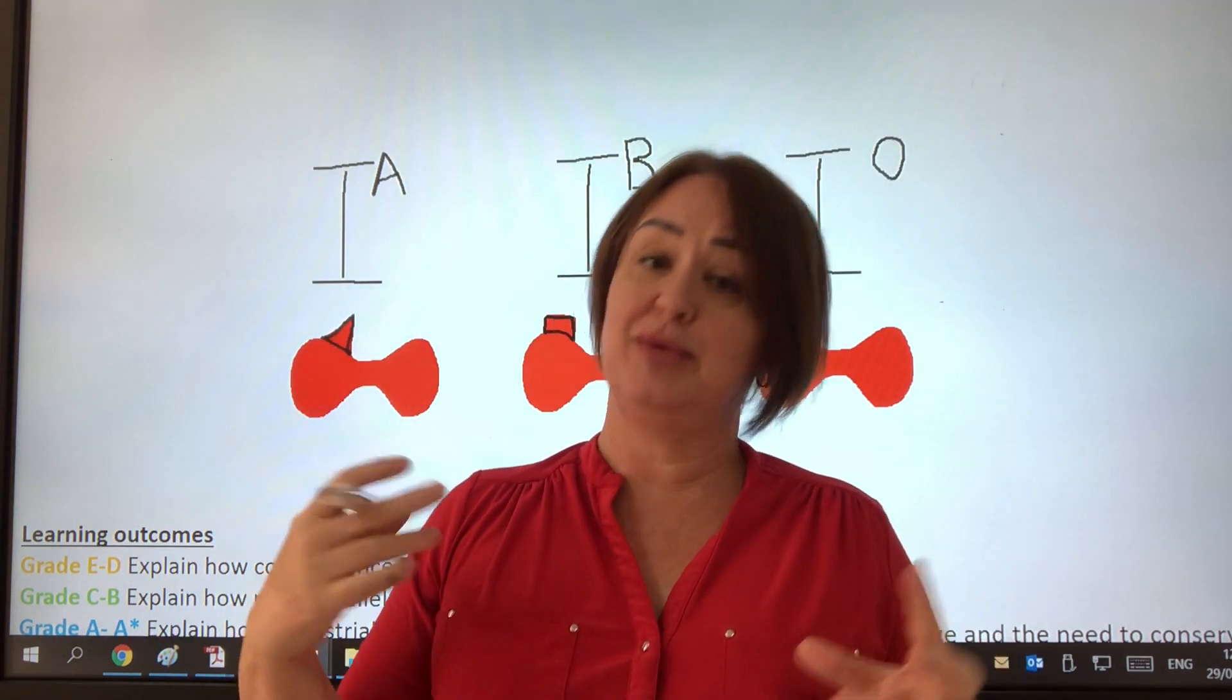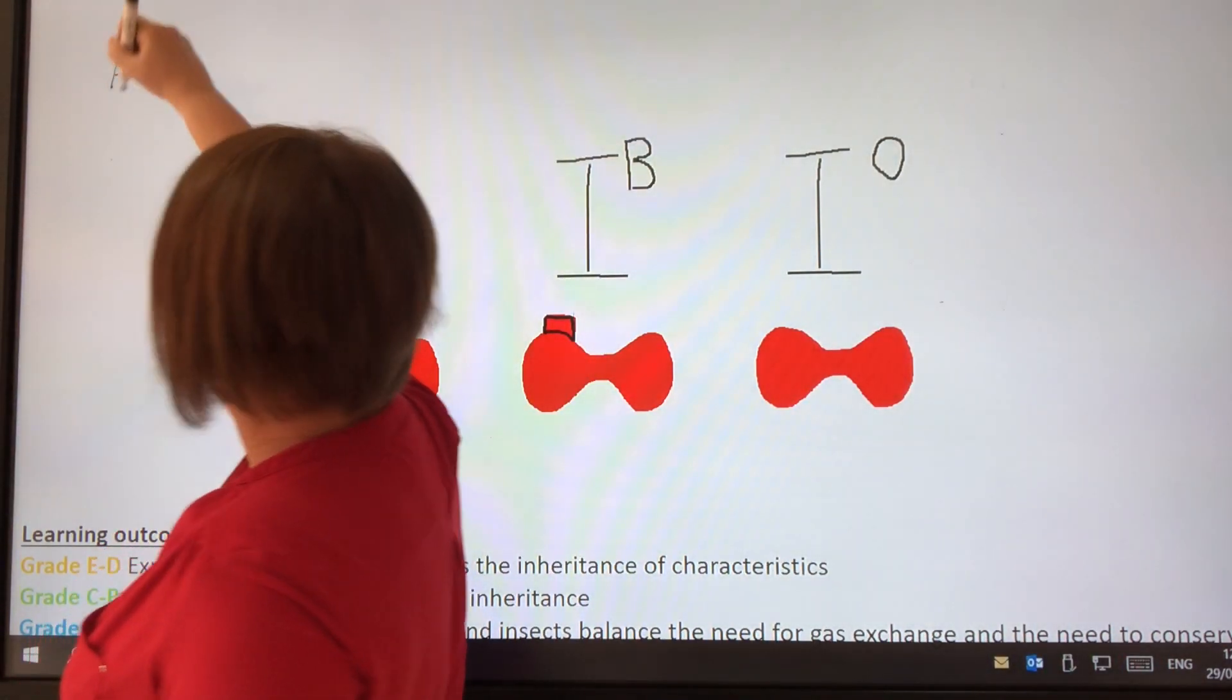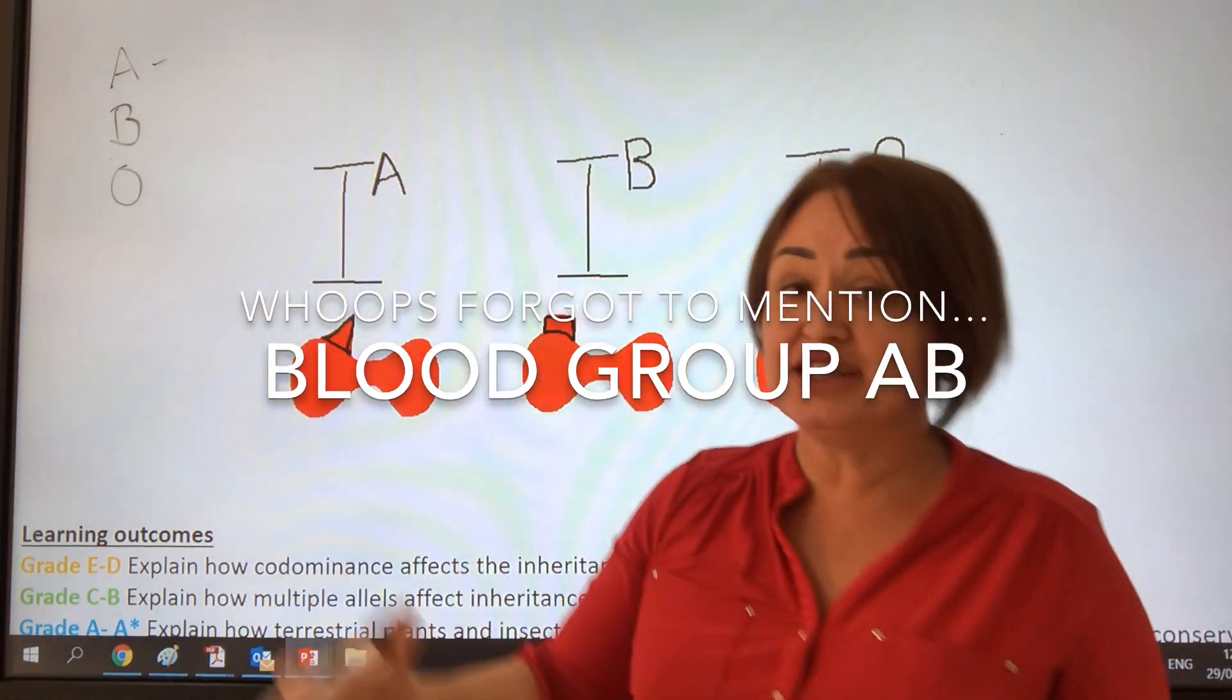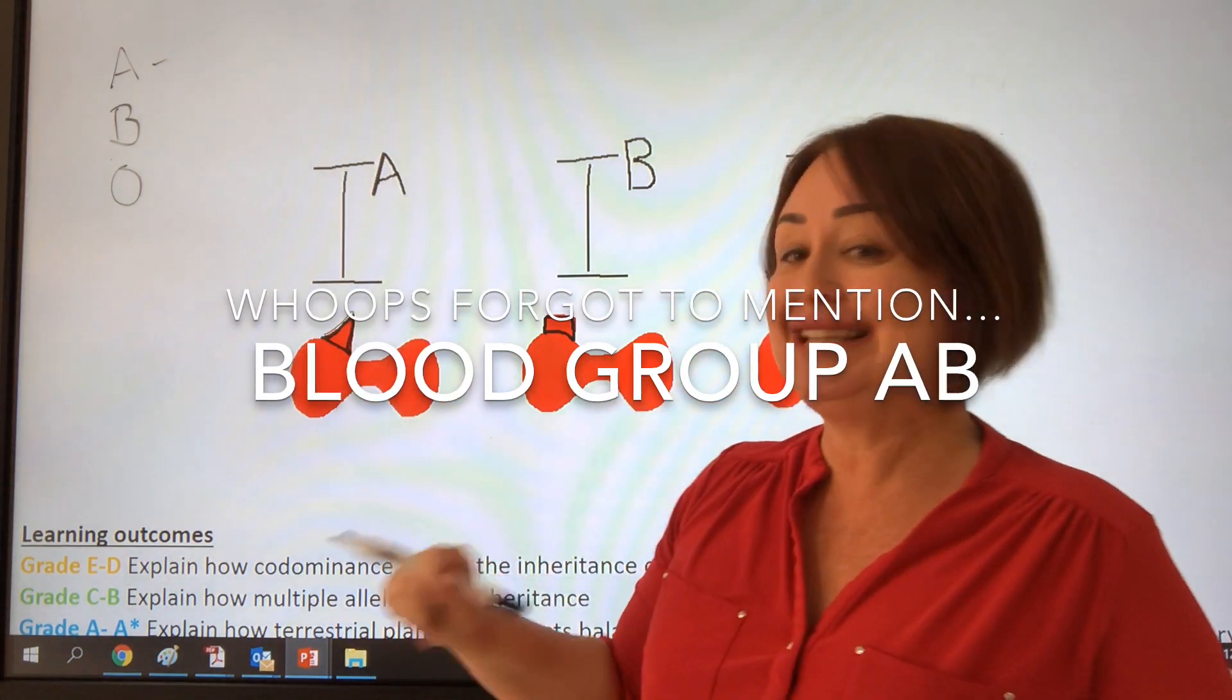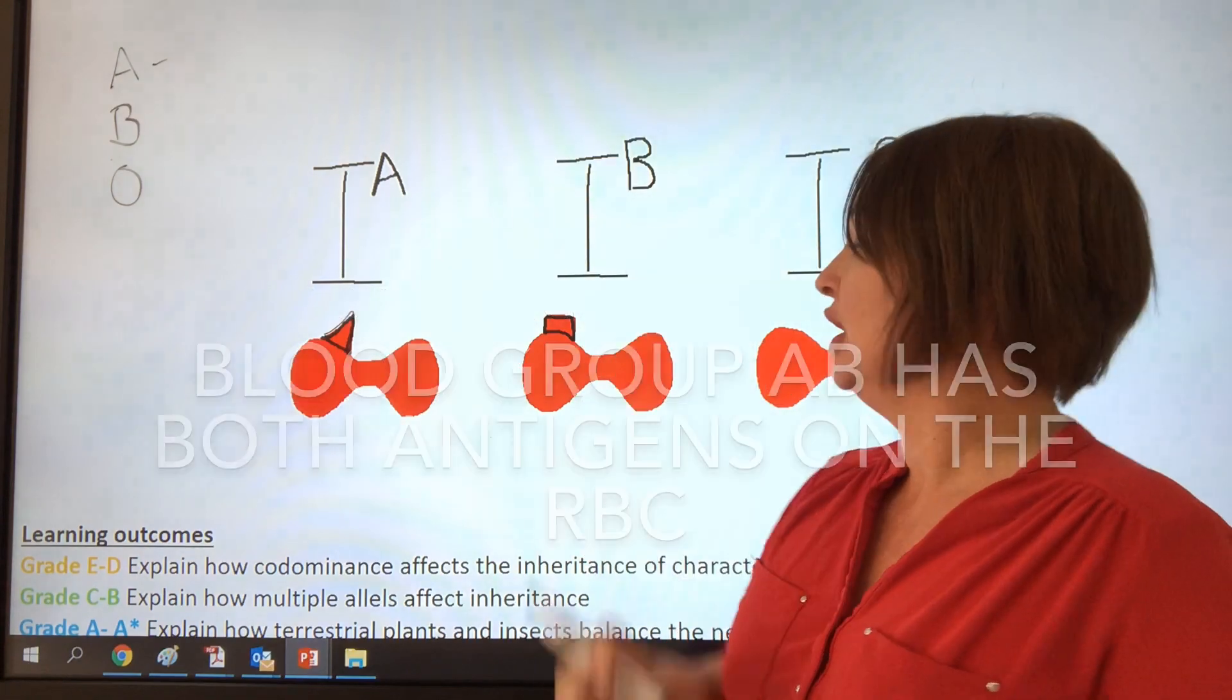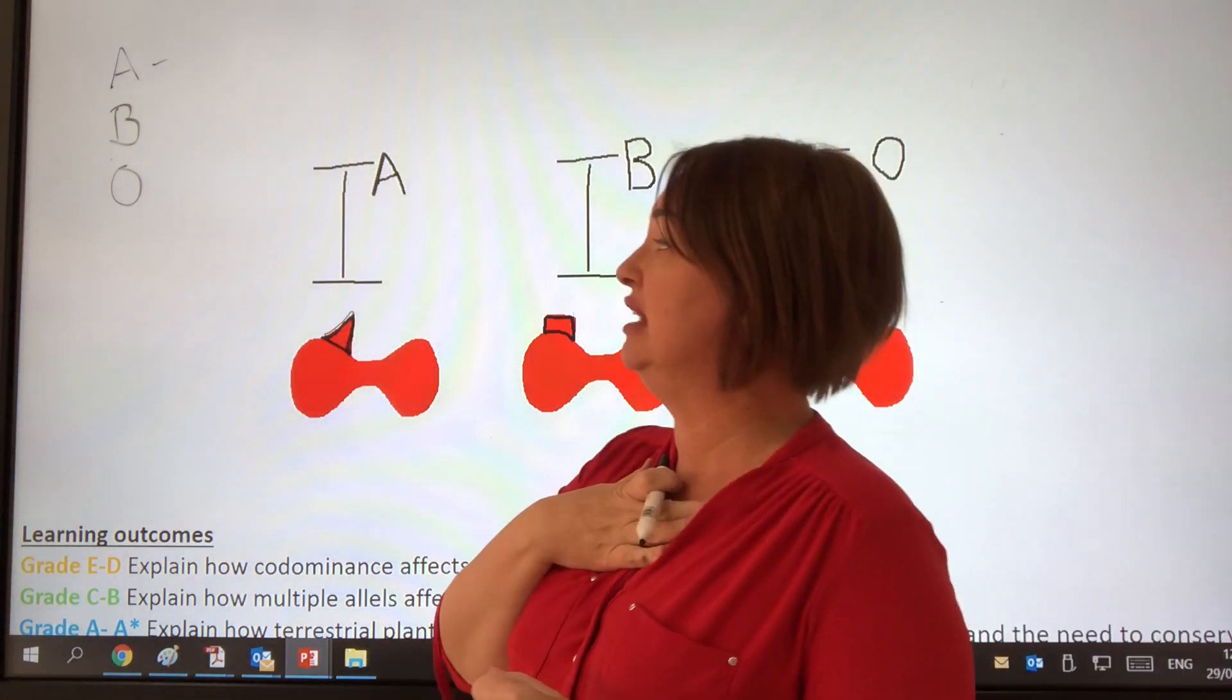We're now looking at another example, and this is where we look at multiple alleles. Now we all know about blood groups because we did it at GCSE, right? You can be blood group A, you can be blood group B, or you can be blood group O. And if you're blood group A, then basically you have the antigen on your red blood cell surface, denoted by antigen A. But we stick it superscript on a letter I. Why? Because it's co-dominant. It's co-dominant with antigen B. Both of those are dominant to blood group with no immunoglobulin.